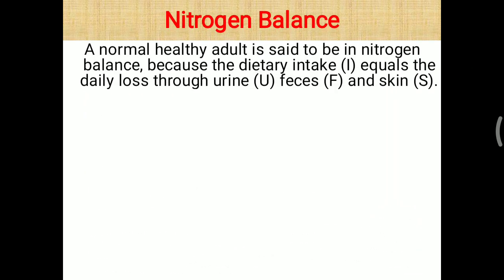When learning about protein, we must understand it in relation to nitrogen, because nitrogen is only present in protein. Among carbohydrates, lipids, and protein, only protein contains nitrogen in the amino group NH2. A normal healthy adult is said to be in nitrogen balance because dietary intake equals the daily loss through urine, feces, and skin. In urine, creatinine and urea contain a good amount of nitrogen. Skin also loses some nitrogen through the outer layer.